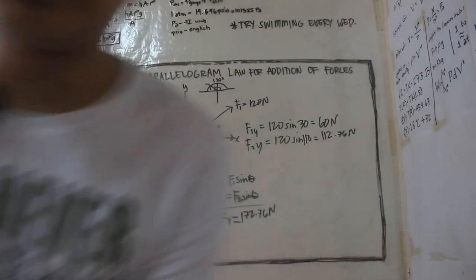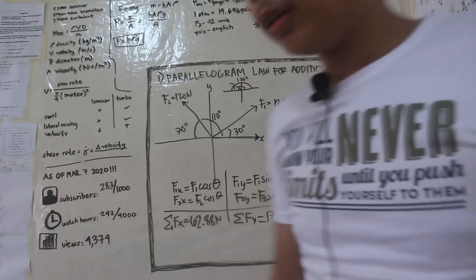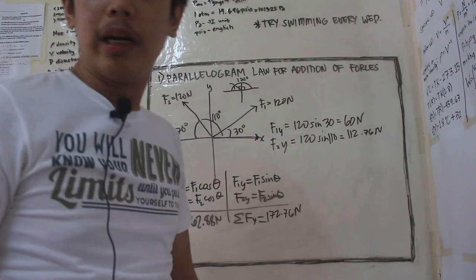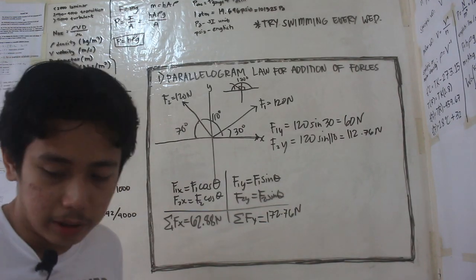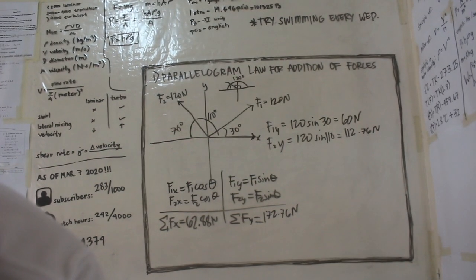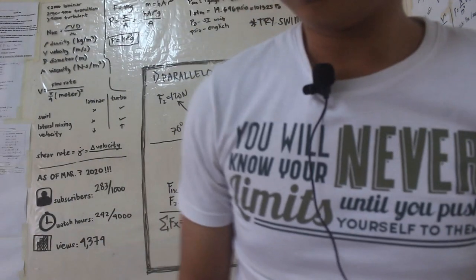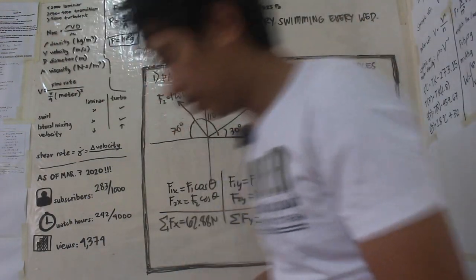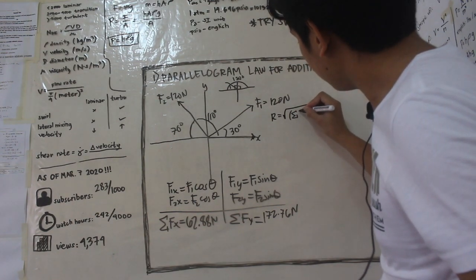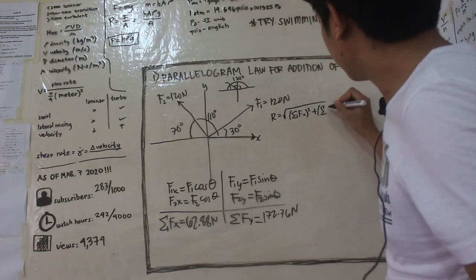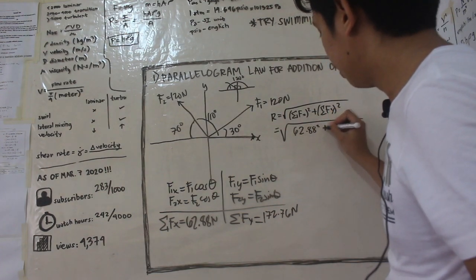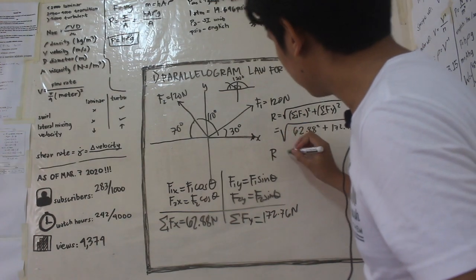Na summation ng force sa y-axis natin. So since nakuha na natin yung summation natin ng force sa x-axis saka summation ng force sa y-axis, makukuha na natin yung resultant niya guys. So alam naman natin na, since alam naman natin na ang resultant ay equal siya ng summation f of x squared plus summation f of y squared. So i-input na natin dito, 62.88 squared plus 172.76 squared. So makukuha natin na ang resultant natin ay